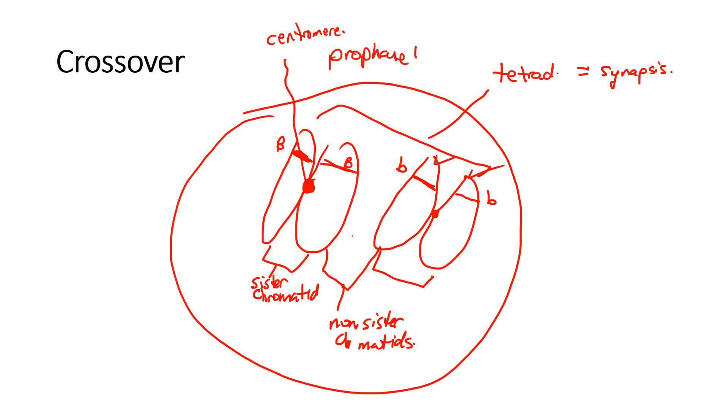So during the synapsis process, these two non-sister chromatids—let's just put some distinguishing features on them—cross over and exchange genetic information.